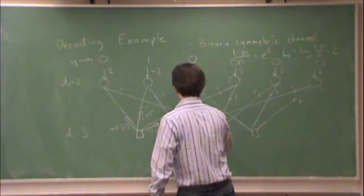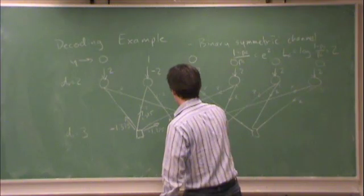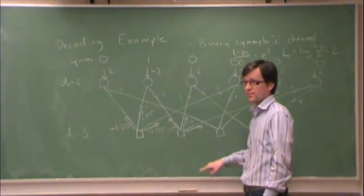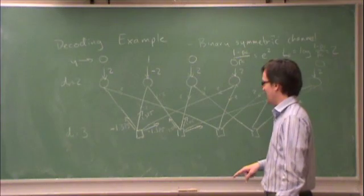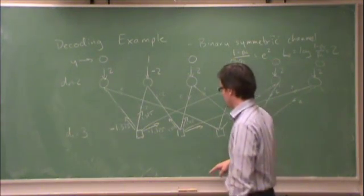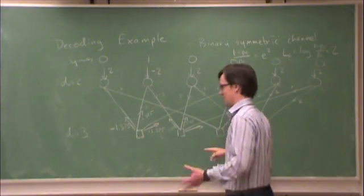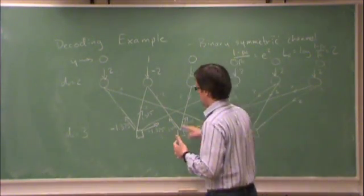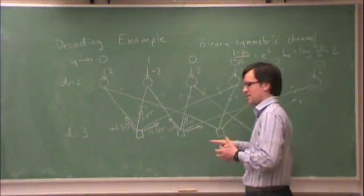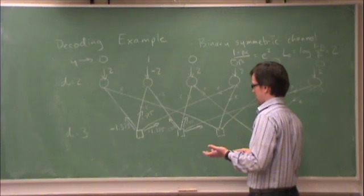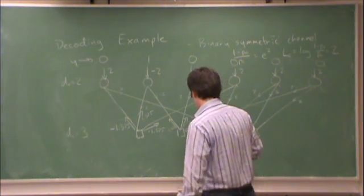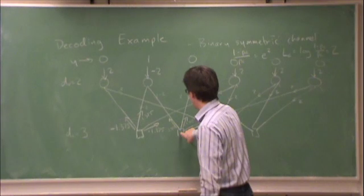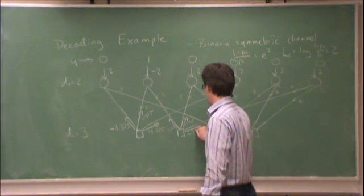And the outbound message here — the inbound messages are minus 2 and plus 2. It turns out all you need to do is calculate one of these, and they all become either plus or minus. Because all of the incoming messages have the same magnitude, the outgoing messages will all have the same magnitude, just different signs. That will change in the next iteration though. The outbound message here is 2 arc tanh of tanh(−1) times tanh(1): minus 1.325.